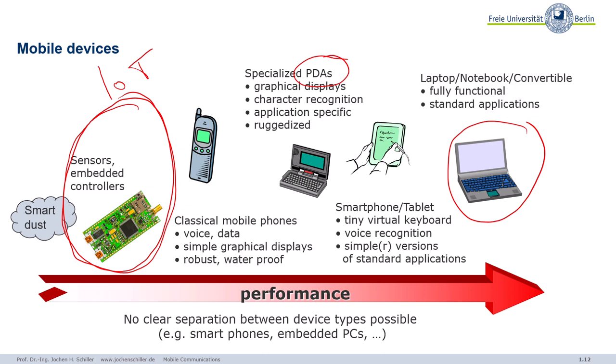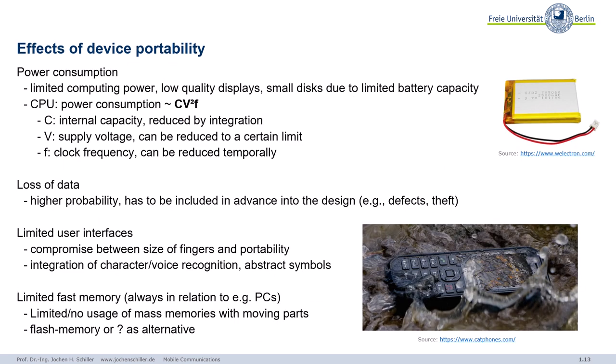What does it mean if all these devices are portable? The effects of device portability are really a problem. All the devices need energy. As soon as your smartphone gets warm, it wastes energy — you accelerate electrons, they bump into the metal layer structure of the chip like copper or silver, and this bumping heats up the whole chip structure. Power consumption is a key problem.